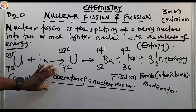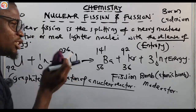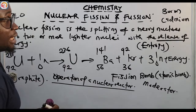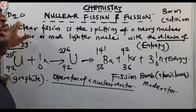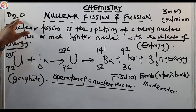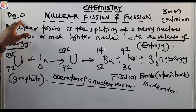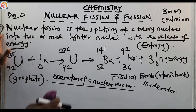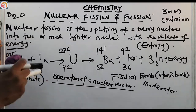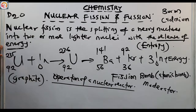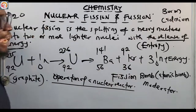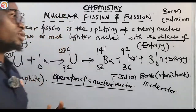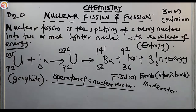To summarize: moderators are used to slow down neutrons in a nuclear reactor. Examples are D2O — heavy water, also called deuterium oxide — and graphite. When the entropy due to neutrons is too high, we add boron and cadmium to absorb the excess neutrons. That's all you need to know about nuclear fission.